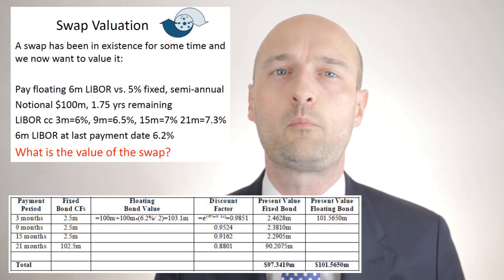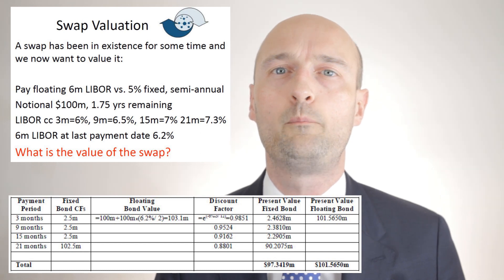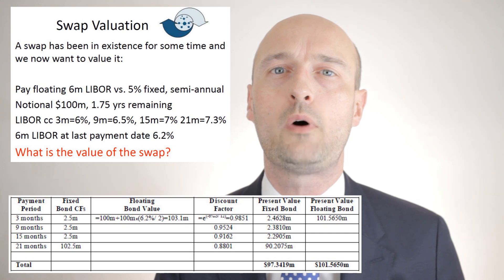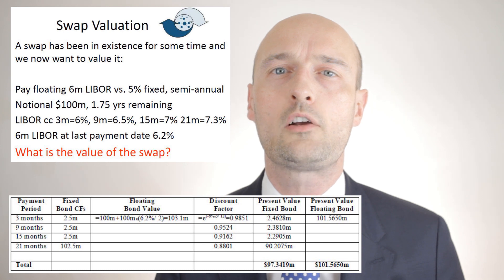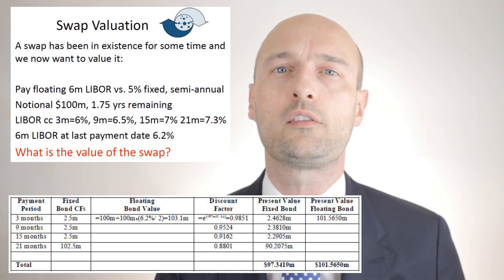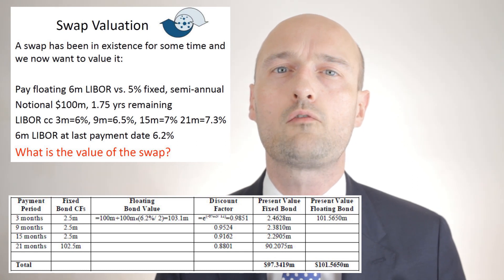Summing those up gives us the value of the fixed rate bond, which in our example is $97.3419 million. Next, we present value the floating rate bond. A basic semi-annual coupon floating rate bond has the coupon indexed to LIBOR — each coupon date the coupon equals par value times one-half the six-month rate quoted six months earlier. Only the next coupon is known at the current date; the later ones are random.